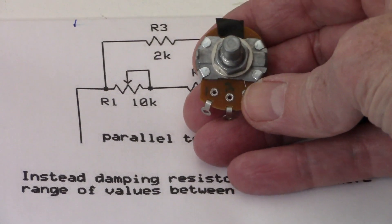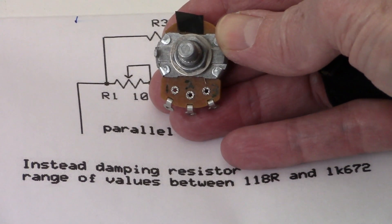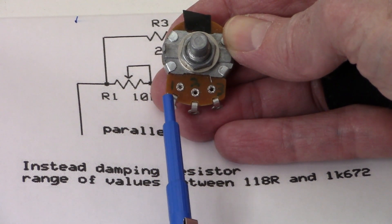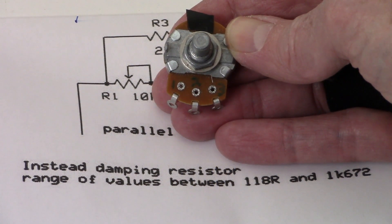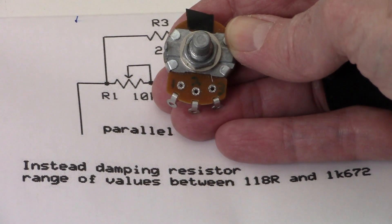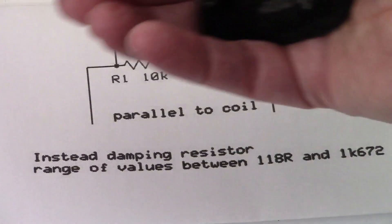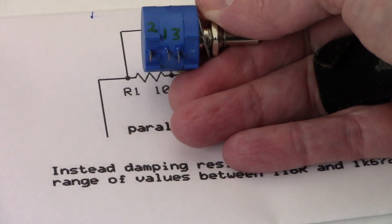Maybe people might be more familiar with this style. This is a single turn pot and the terminals are one, two, and three. That's pretty standard. But like I said, this one here is more accurate and that's what we're going to use.